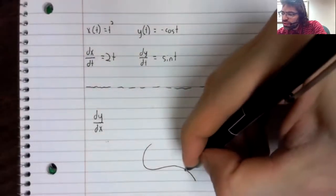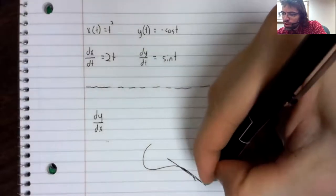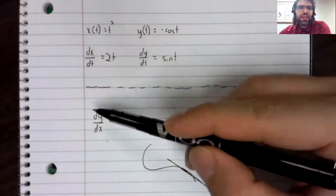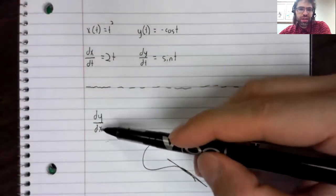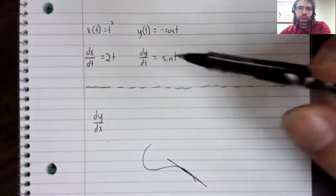We can still talk about the slopes of tangent lines, for example. And to do that, we need this derivative rather than this one.